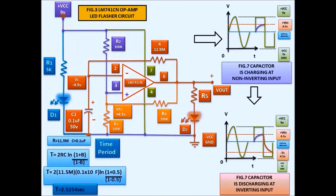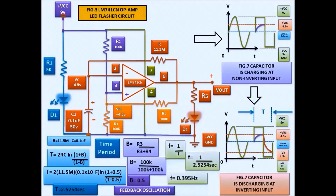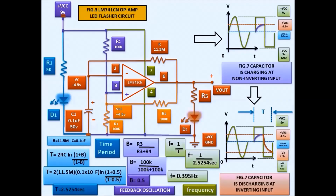To calculate the time period T — the charging and discharging of the capacitor — we use the formula: T equals 2RC times the natural log of 1 plus beta. We use R of 11.5 kilohms (an arbitrary value) and C1 of 0.1 microfarad. Solving for the feedback ratio beta, R3 divided by R3 plus R4 gives 0.5. Substituting into the time period formula gives us the period, and the frequency equals 0.395 Hz.